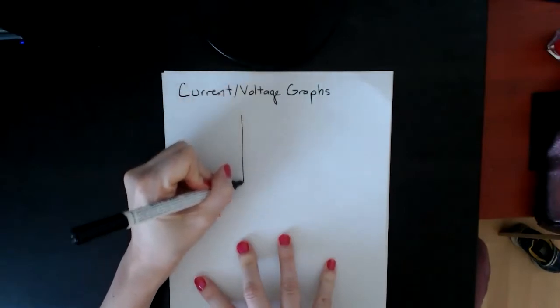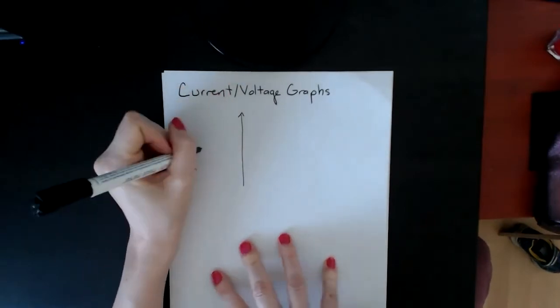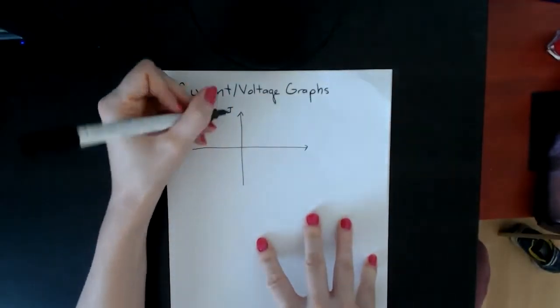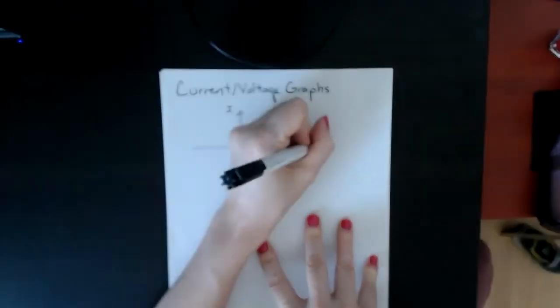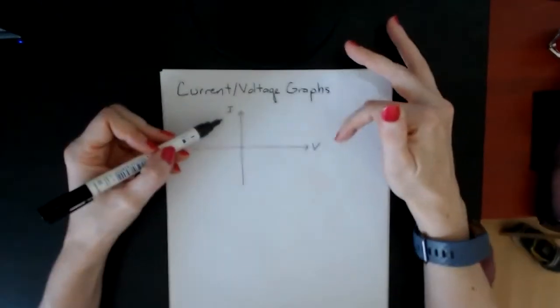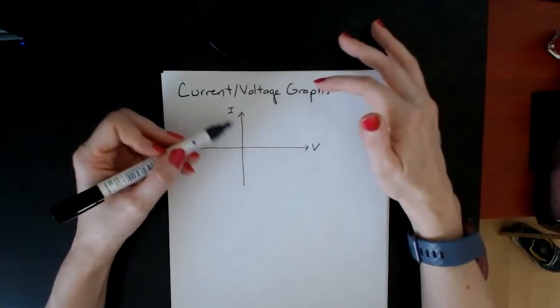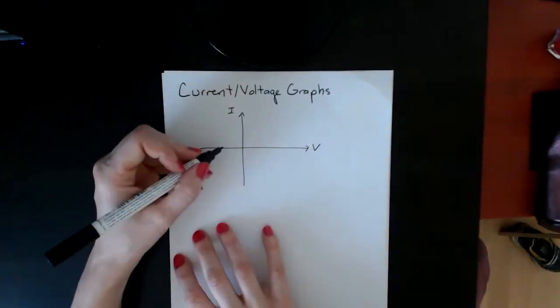With these graphs, traditionally I drew them with current on the y-axis and voltage on the x-axis, but please note that it doesn't really matter. Sometimes you can see them reversed, and if you see them reversed, you should think about what that means for the actual shape of the graph.